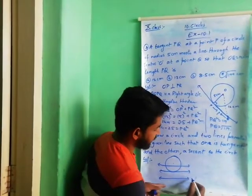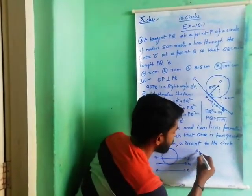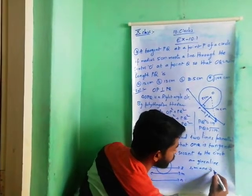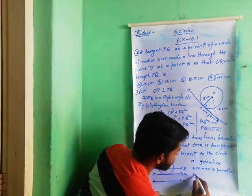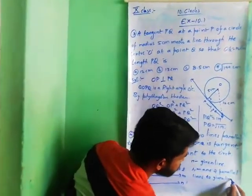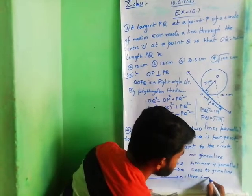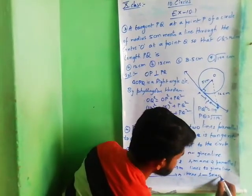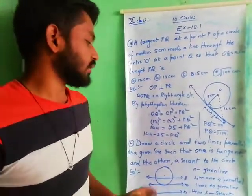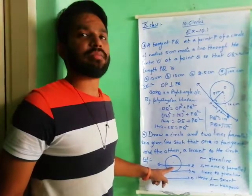For identification, you write: N is the given line, L and M are the two parallel lines. L is the secant, M is the tangent. Otherwise the diagram itself is enough, since the question only asks you to draw a circle and two lines parallel to a given line where one is a tangent and the other is a secant.